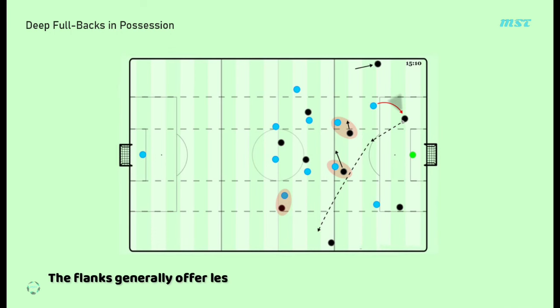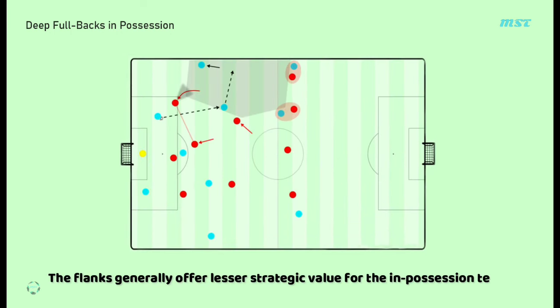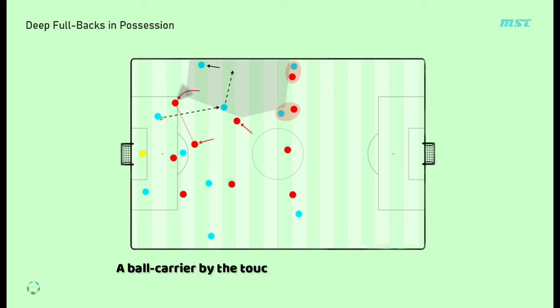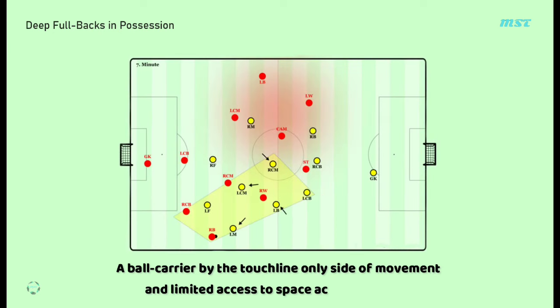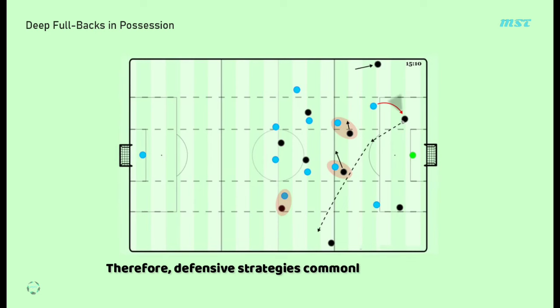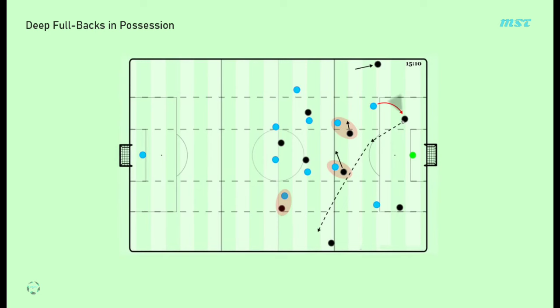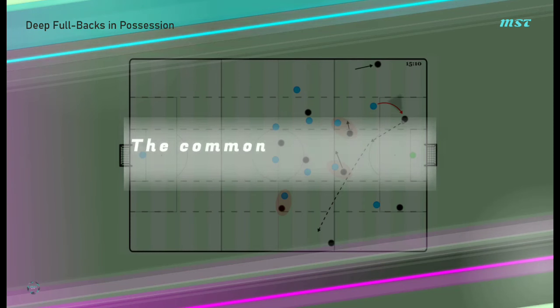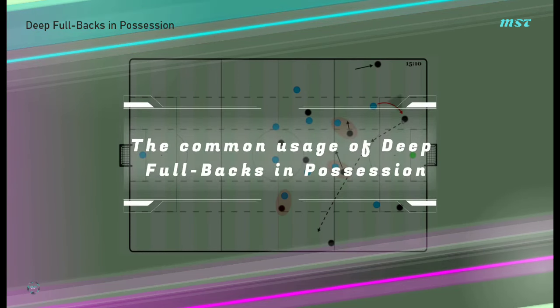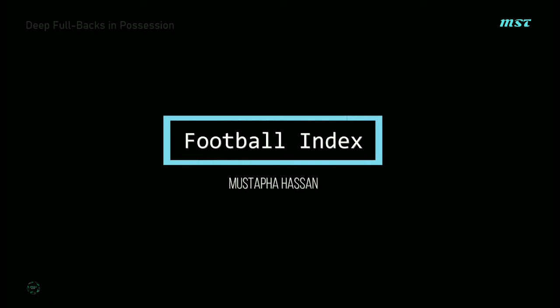The flanks generally offer lesser strategic value for the in-possession team. A ball carried by a touchline only limits movement and access to space across the pitch. Therefore, defensive strategies commonly look to shepherd the opponent towards the outside and into a wide trap. This explains the common usage of deep fullbacks in position.